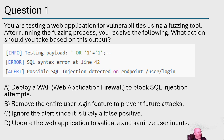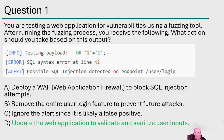Option D: update the web application to validate and sanitize user inputs. That's another great answer, so it really comes between A and D. Web application firewalls are usually the second-best answer — we don't want them as our primary control. By updating the application to validate and sanitize user inputs, we stop the attack from being able to occur. D is the correct answer on this one.